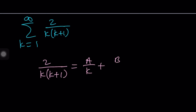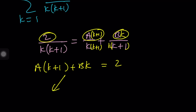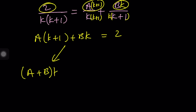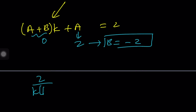This is where things get very interesting, because we can break this down using partial fractions — the same technique used when integrating rational functions. We assume 2 over k(k+1) equals A over k plus B over k+1. Multiplying through: A times k plus 1 plus B times k equals 2. There's no k on the right-hand side, so A plus B must equal 0 and A must equal 2, which gives B equals negative 2. So the sum becomes sigma of 2 over k minus 2 over k plus 1.